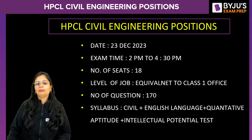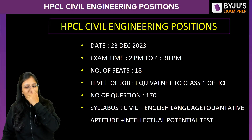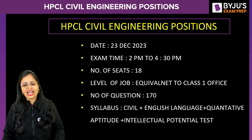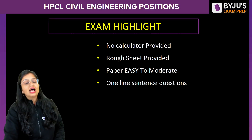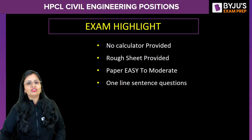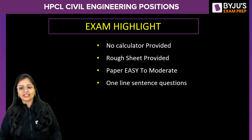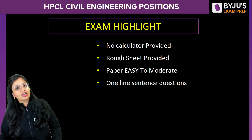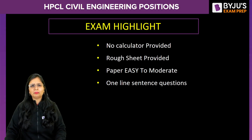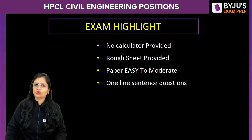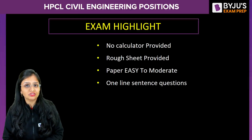The paper was from 2 p.m. to 4:30 p.m. The number of seats was 18. The number of questions was 170, and the syllabus covered civil engineering, English language, quantitative aptitude, and intellectual potential test. Main highlights: no calculator was provided, and given the level of questions, it wasn't needed. Rough sheets were provided. The paper was easy to moderate with very simple, one-line sentence questions.